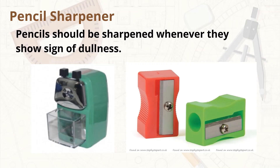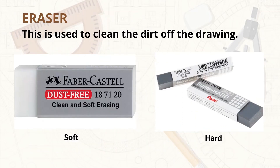Pencil sharpener — pencils should always be sharpened whenever they show signs of dullness. Various types and designs of sharpeners are available in different stores. Eraser — this is used to clean the dirt off the drawing. There are different types of eraser: a soft eraser is advantageous in removing smudges and pencil marks, whereas a hard eraser is useful for making changes and correcting errors in the drawing.